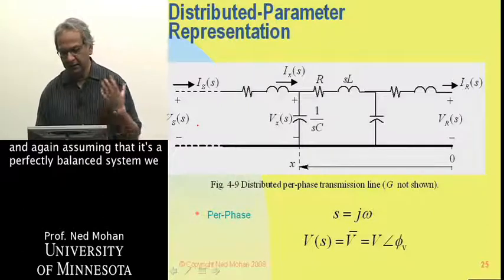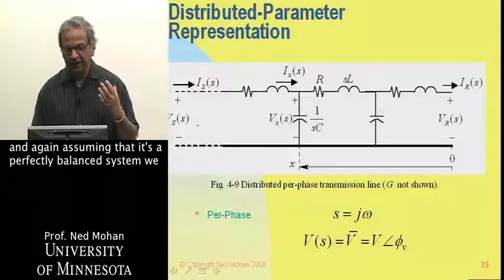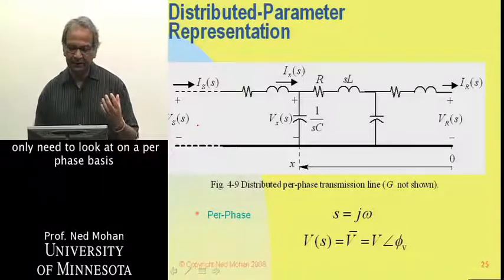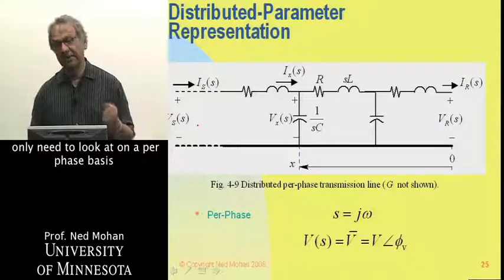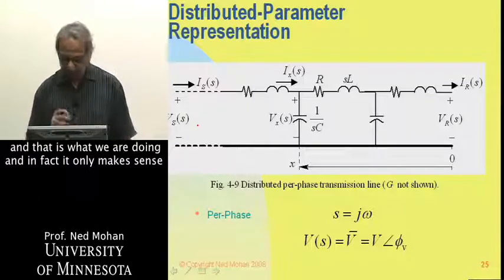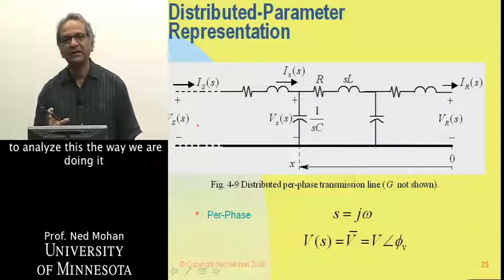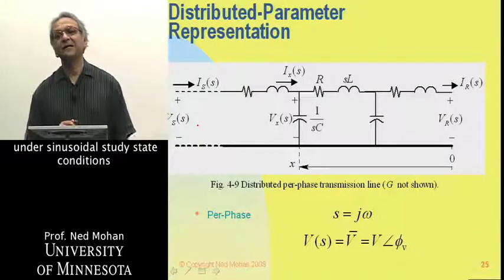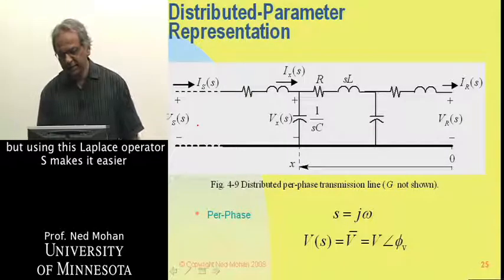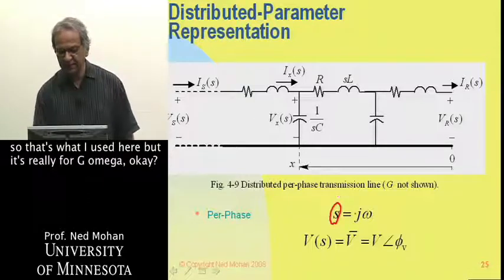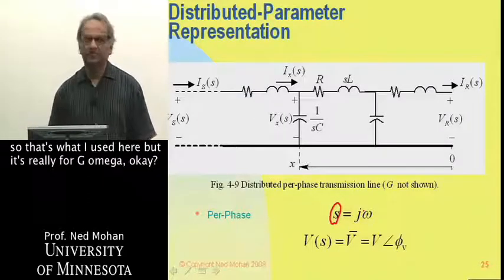And again, assuming that it's a perfectly balanced system, we only need to look at on a per-phase basis. And that is what we are doing. In fact, it only makes sense to analyze this the way we are doing it under sinusoidal steady-state conditions. But using this Laplace operator S makes it easier, so that's what I have used here, but it's really equal to j omega, okay?